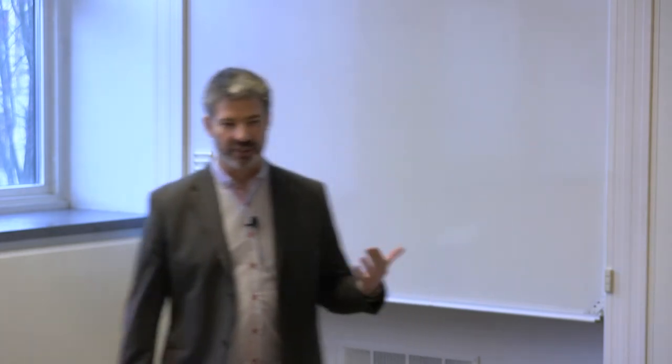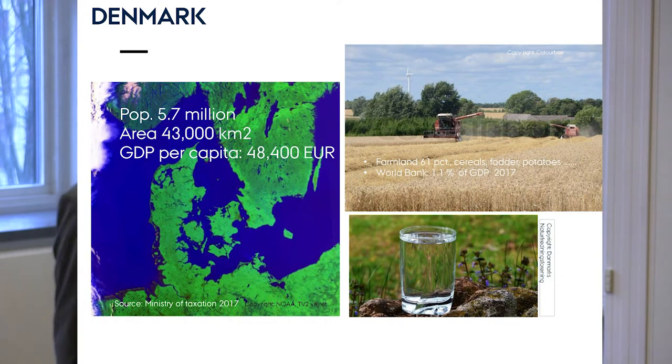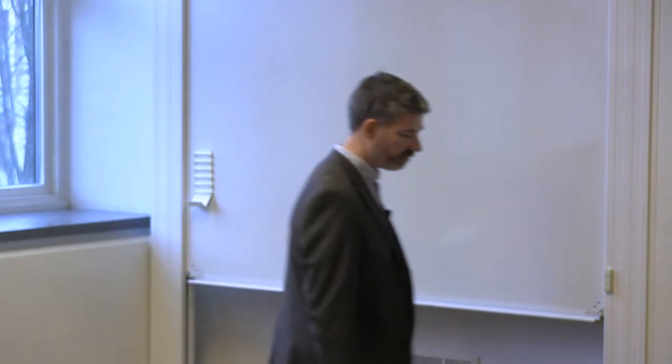So most of you know that we are neighbors here. So we have Denmark with a population of approximately 5.7 million people, 43,000 square kilometers and the GDP per capita of about 48,000 euros. It's a very intensive farmed country, so about 61% is farmland of the country. Main crops are cereals and fodder crops, potatoes. According to the World Bank, agriculture constitutes like 1.1% of Danish GDP in 2017.